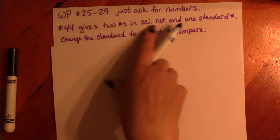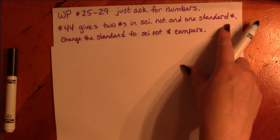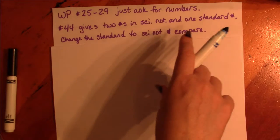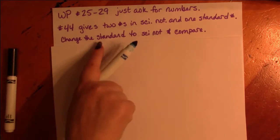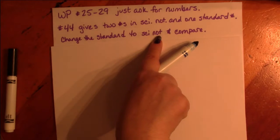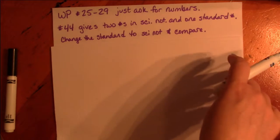Number 44 gives you two numbers in scientific notation and one standard number. The best thing to do is change the standard number to scientific notation and then you can compare them all.